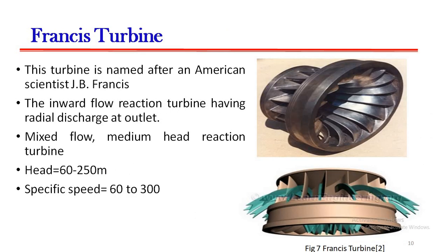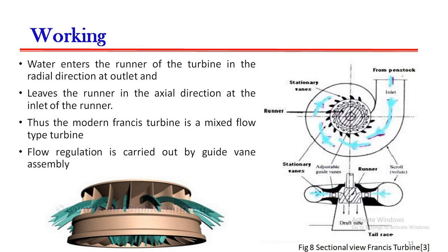Francis turbine is named after an American scientist J.B. Francis. It is an inward flow reaction turbine having radial discharge at outlet. It is a mixed flow medium head reaction turbine. The head range is 60 to 250 meters and specific speed is 60 to 300. Water enters the runner of the turbine in the radial direction and leaves the runner in the axial direction, making the Francis turbine a mixed flow type turbine. Flow regulation is carried out by guide vane assembly. On the right hand side you can see the sectional view of a Francis turbine.